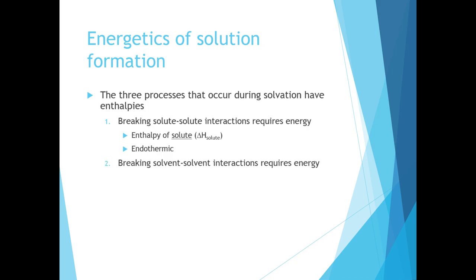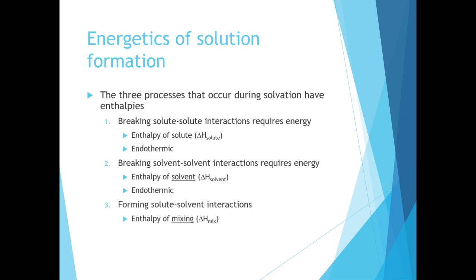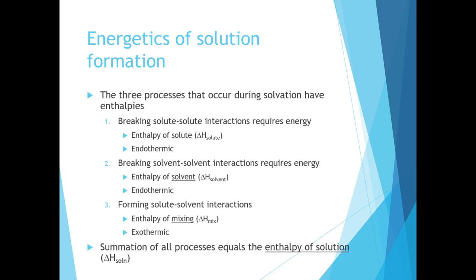Our second type of enthalpy is called the enthalpy of solvent — all about breaking the solvent-solvent interactions. This also requires energy; it is endothermic. Finally, while we're breaking two different types of interactions, we're also forming new ones in the solute-solvent interactions. This is called enthalpy of mixing, abbreviated delta H mix. This is an exothermic process. So we have two endothermic processes of breaking interactions and one exothermic process where interactions are formed. If we add all three together using Hess's law of summation, we can calculate the enthalpy of solution.